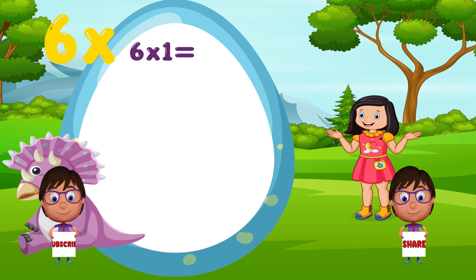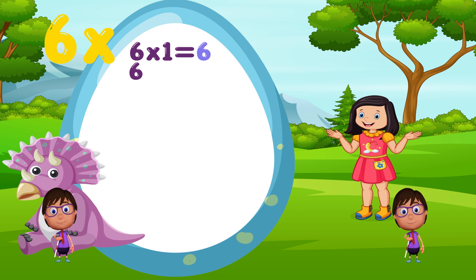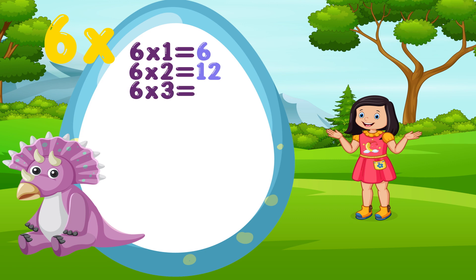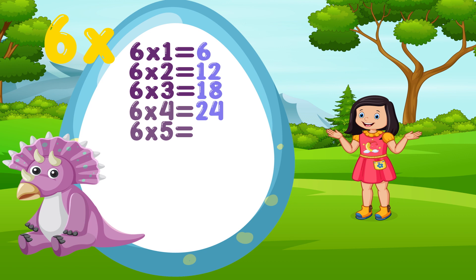6 times 1 is equal to 6. 6 times 2 is equal to 12. 6 times 3 is equal to 18. 6 times 4 is equal to 24. 6 times 5 is equal to 30.